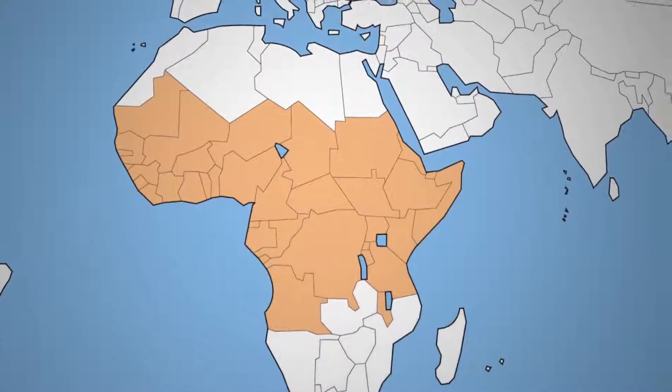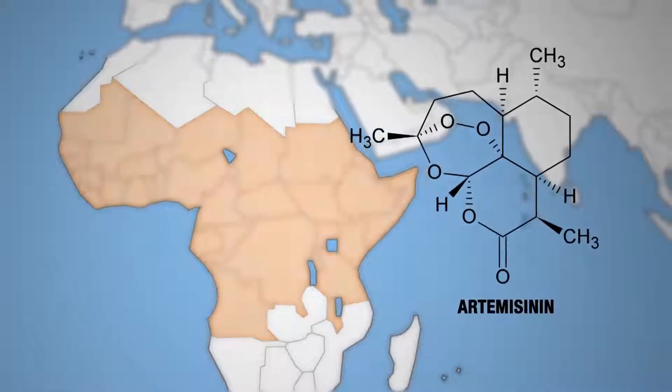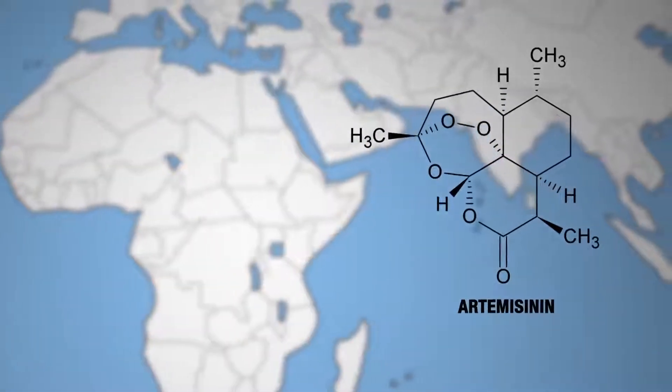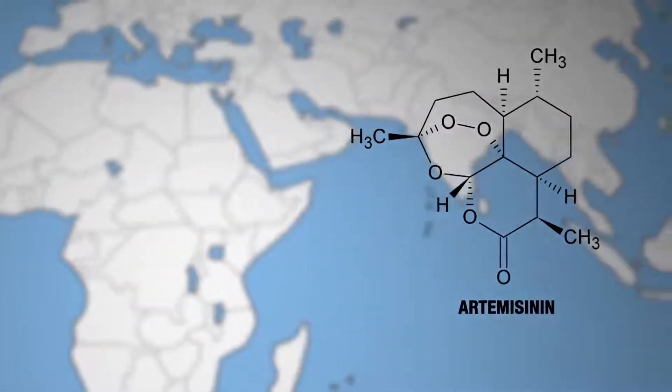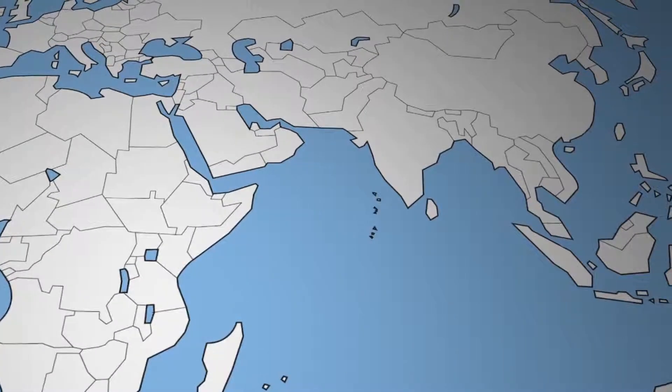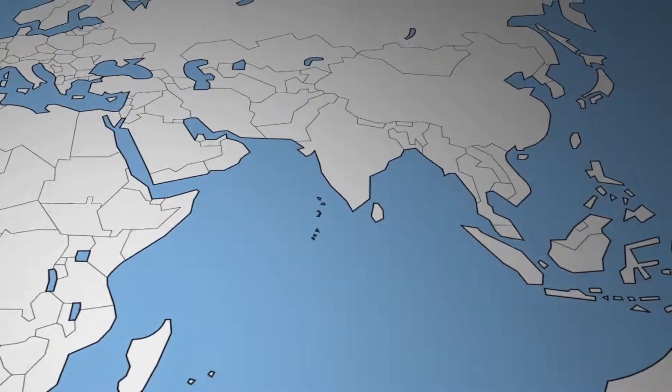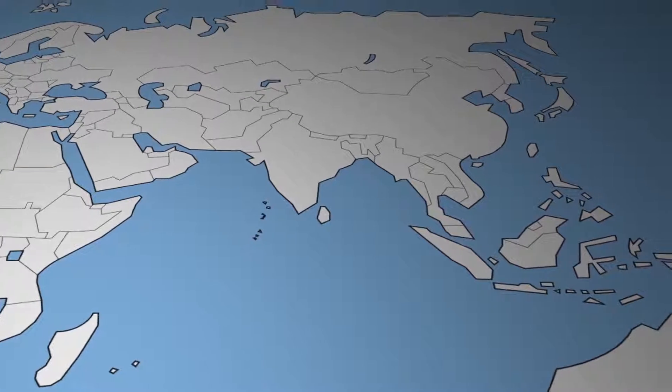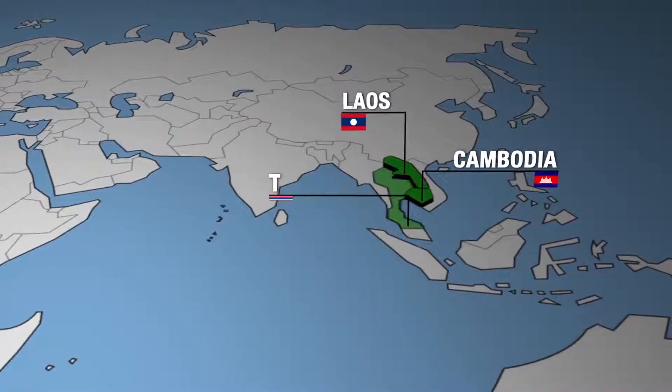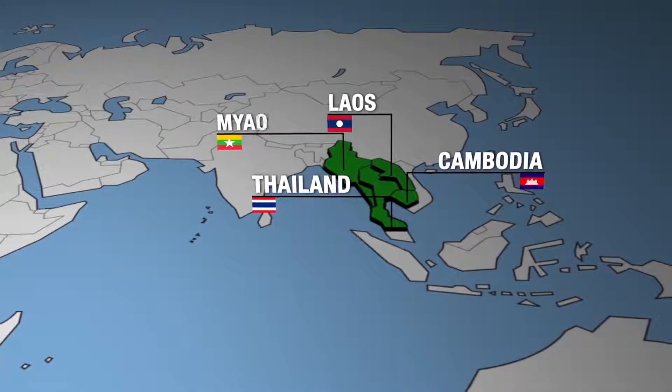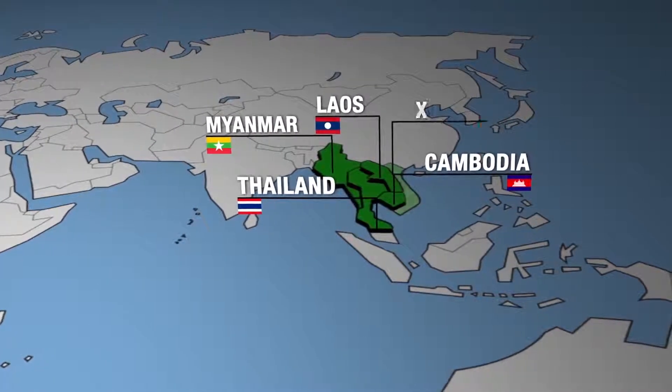But like their forerunners, ACTs, therapies combining artemisinin with one or two other antimalarials, are coming up against the parasite's ability to adapt. Emerging resistance to ACTs has been reported recently in Cambodia, Laos, Thailand, Myanmar, and Vietnam.